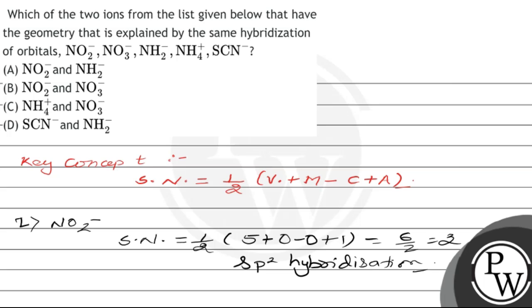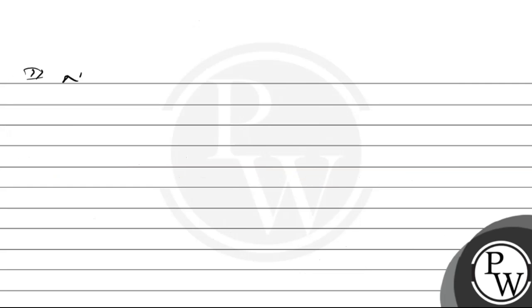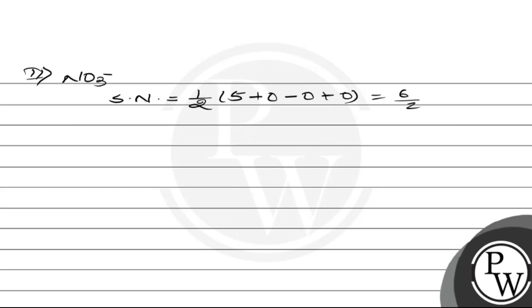The second species is NO₃⁻. The steric number of NO₃⁻ is calculated as half of the valence electrons of N, plus the number of monovalent atoms, minus cationic charge, plus anionic charge. This equals 6/2 = 3, which corresponds to sp2 hybridization.